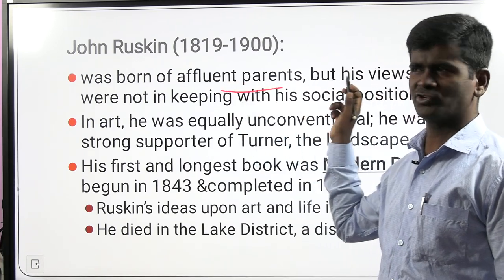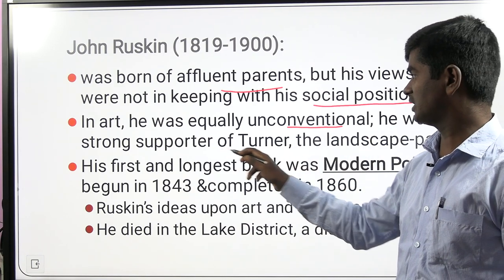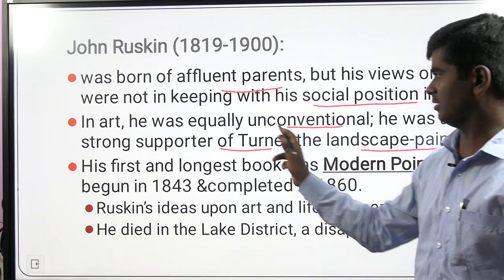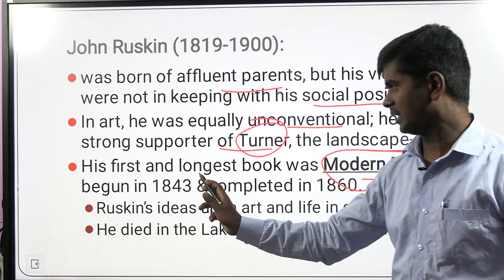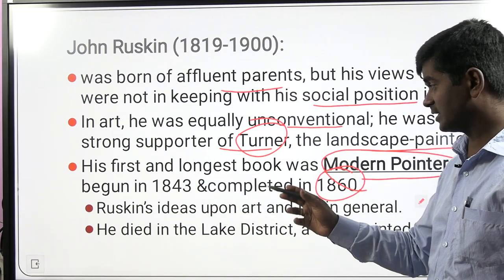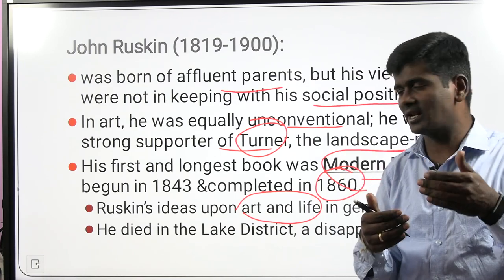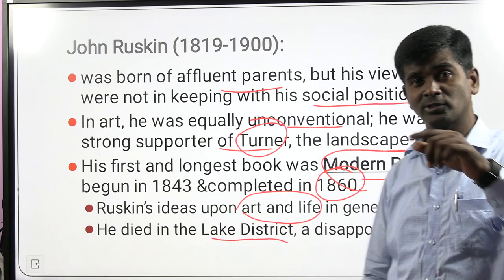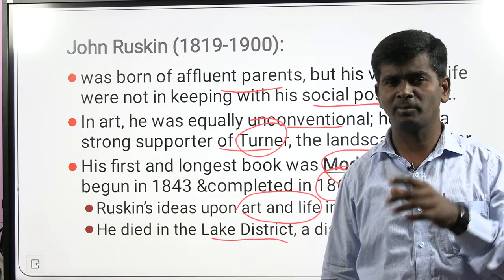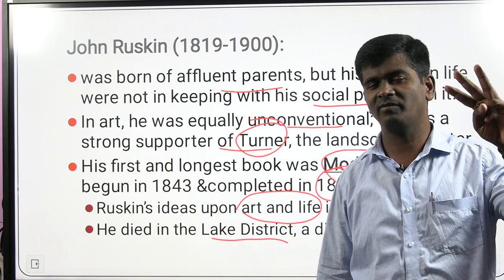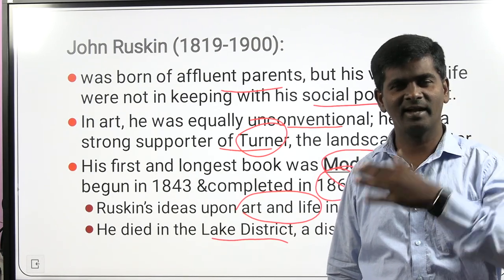John Ruskin was affluent and had a strong social position, and he was unconventional. He was a strong supporter of Turner, the landscape painter. His first and longest book is The Modern Painters, completed around 1860 — about the connection between art and life. He died in the Lake District; he is also a Lake District writer. Remember: Wordsworth, Coleridge, and Southey are the three Romantic Lake School writers.